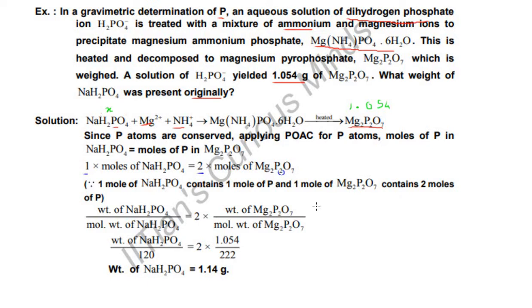I've shown you in earlier videos that moles can be found by weight upon molar weight, and for gases at NTP, this is also volume occupied upon molar volume. These are not gases, so: 1 × weight of NaH2PO4 / molecular weight of NaH2PO4 = 2 × weight of Mg2P2O7 / molecular weight of Mg2P2O7. This entire thing is moles.